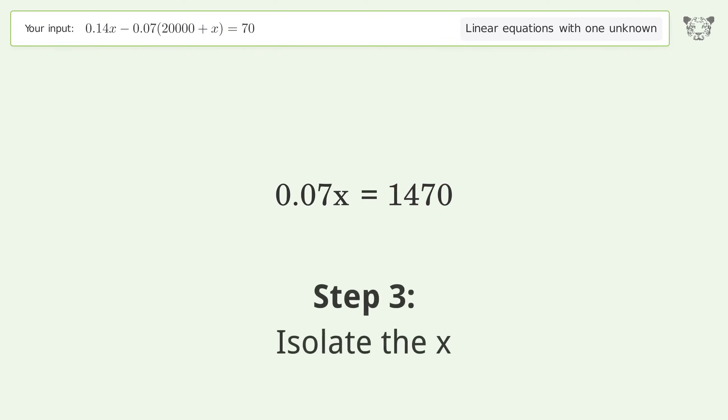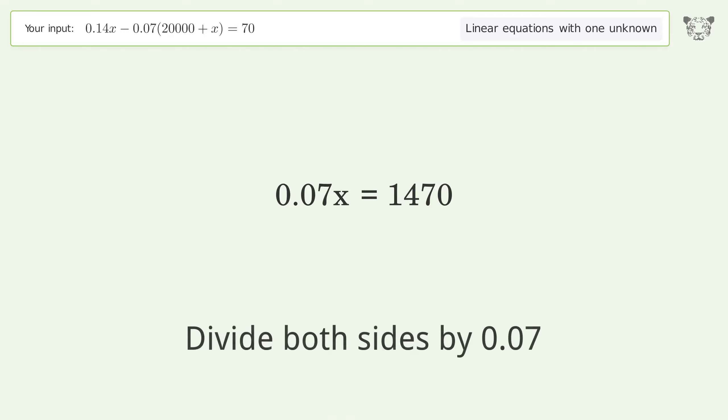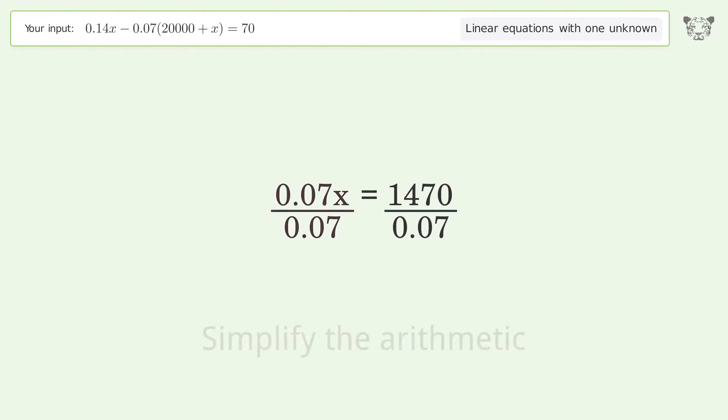Isolate x by dividing both sides by 0.07, then simplify the arithmetic.